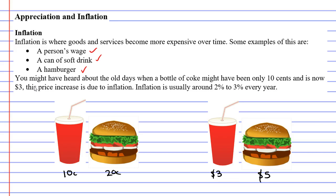Should we be concerned with these price increases? Well, not really, because even though they've become more expensive, our wage has increased also. Back when a hamburger or a drink were really cheap, people might have only made $20 a week, whereas now, when they've become more expensive, we might be making $800 a week. So it all balances out in the end.